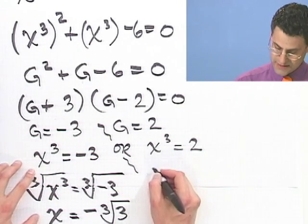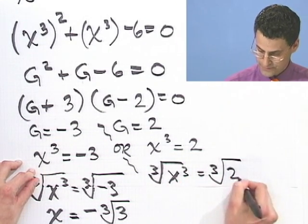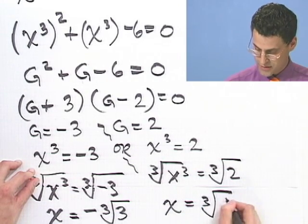And on this side, if I take the cube root of both sides here, I see that x equals the cube root of 2.